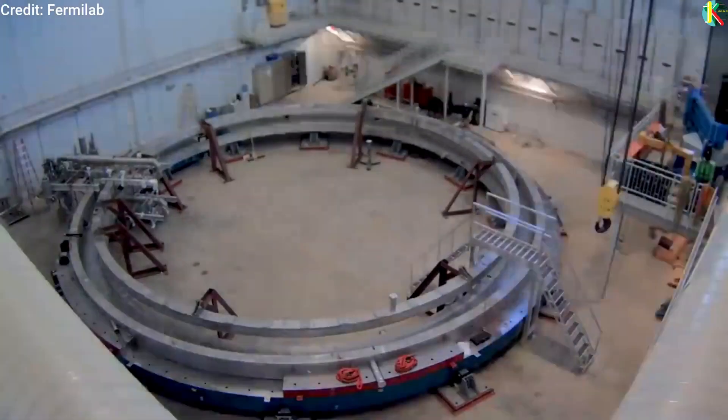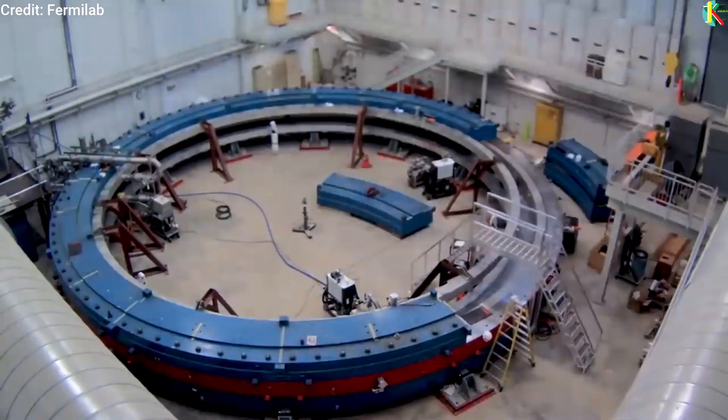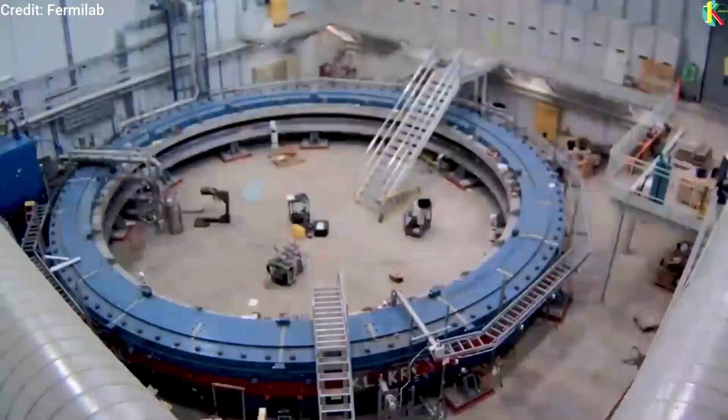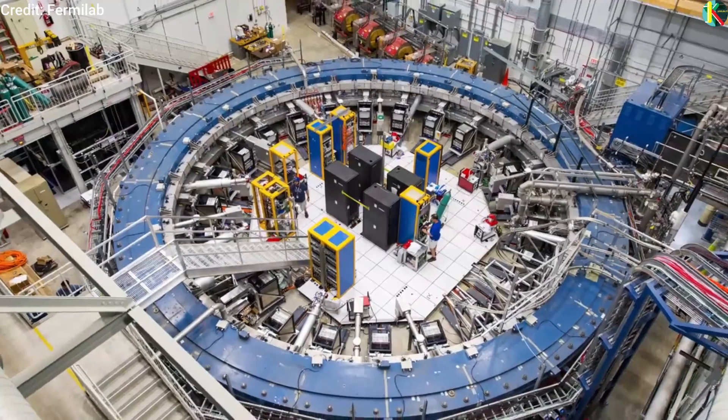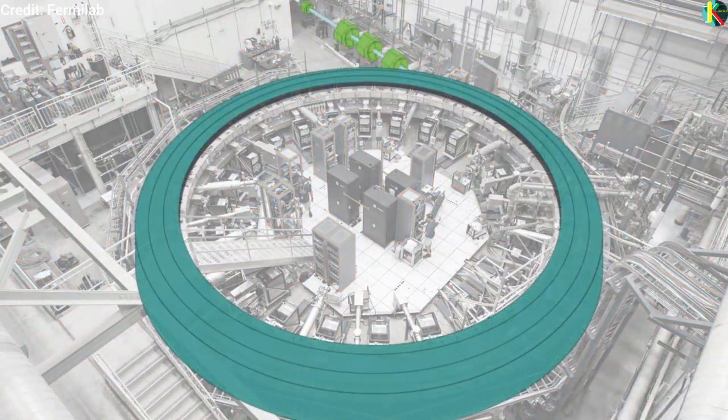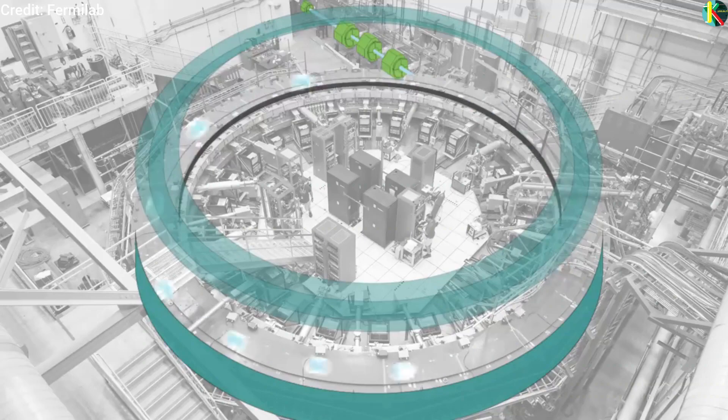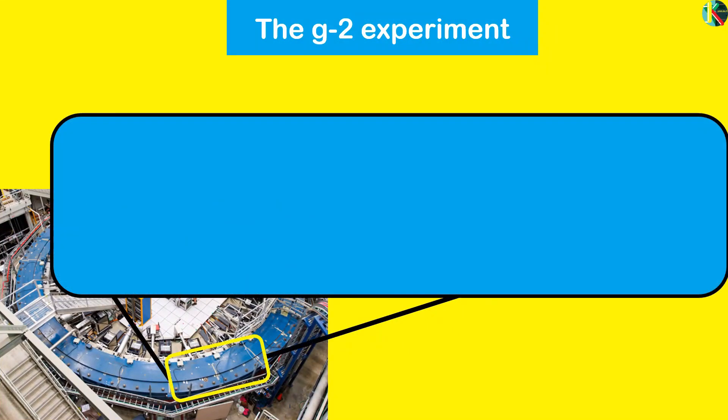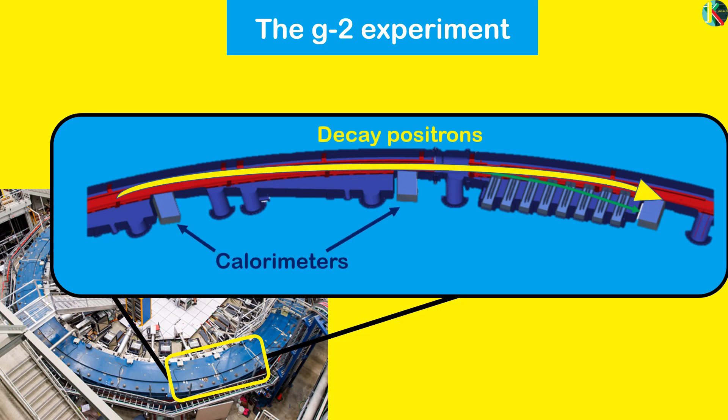The Fermilab muon g-2 experiment follows the same technique used at Brookhaven. Polarized muons whose spins are aligned with their direction of motion are injected into a 14.2 meter diameter storage ring. Here they circle thousands of times thanks to their relativistically stretched lifetime.